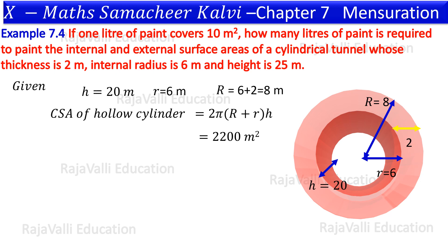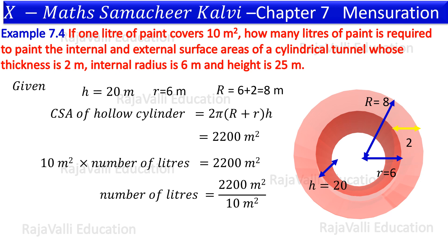The CSA is 2,200 meters square. The condition is 1 liter of paint covers 10 meters square. So, 10 meters square multiplied by the number of liters required equals 2,200 meters square. Moving 10 to the right-hand side as division, we get the number of liters required to paint the tunnel. This is the answer.